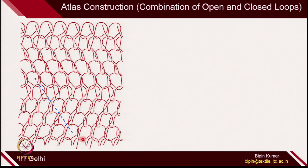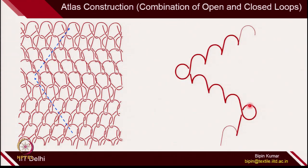Another fabric variation is the opposite: 1 closed and 3 open loops. Following the yarn: closed loop, then open, open, open, then closed again, then open, open, open, then closed — so 1 closed loop followed by 3 open loops, repeating with 8 courses. This is again a combination of overlap and underlap in the same direction (open loop) and overlap and underlap in opposite directions (closed loop). These are the permutations and combinations available in single guide bar warp knitted constructions by varying overlap and underlap direction and pitch.